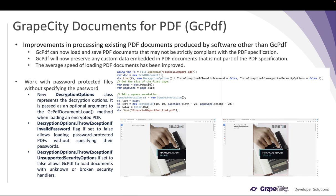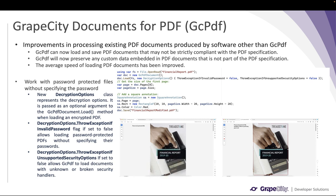Starting with new features in GC PDF: in this release we have made improvements in processing existing PDF documents that are not produced by GC PDF but by other software. Such documents may not be strictly compliant with PDF spec, but they can now be loaded and saved using GC PDF. PDF documents with custom data that is not part of the PDF spec will now be preserved, and the average speed of loading PDF documents has also been improved.